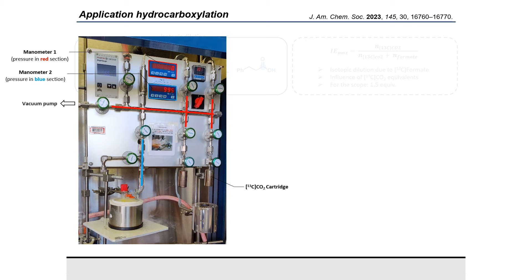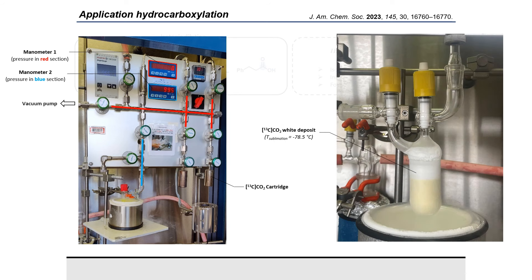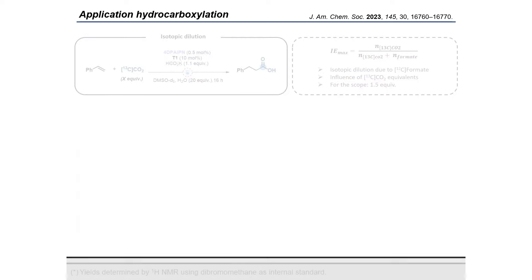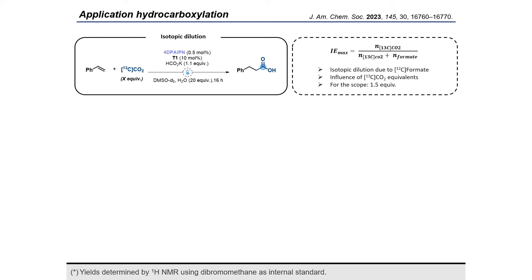Then vacuum is applied in the whole system. Next, carbon dioxide is released into the reactor chamber by heating a sealed cartridge where carbon dioxide is trapped. Thanks to the manometer and the ideal gas law, you can easily determine the exact amount of carbon dioxide you add. Then you usually observe a white deposit when it is trapped in your reactor, as you can see in this picture.